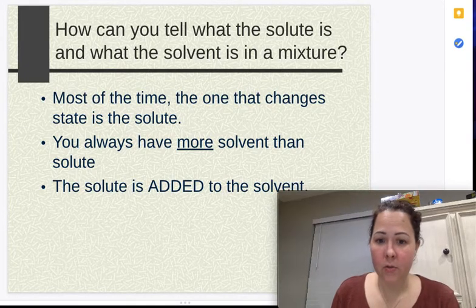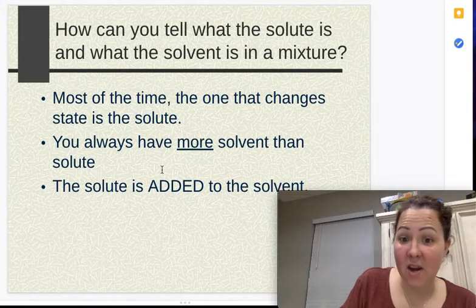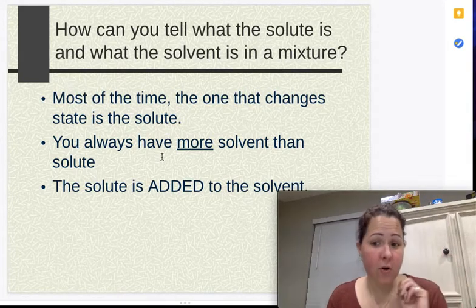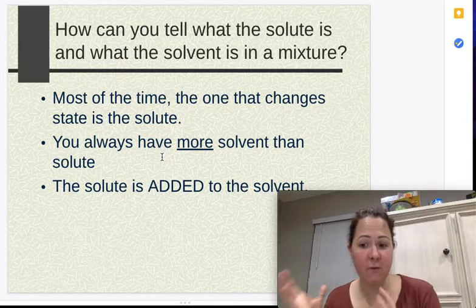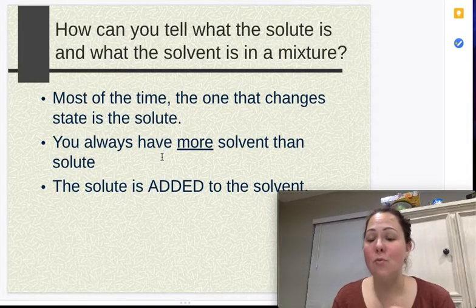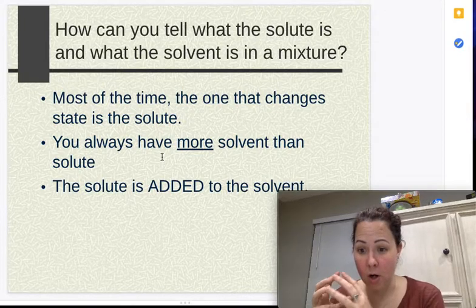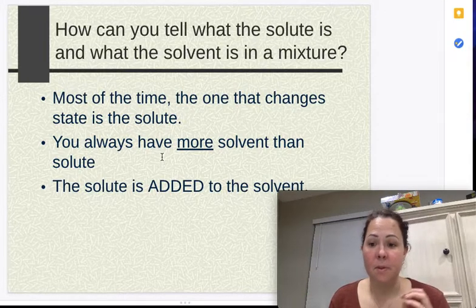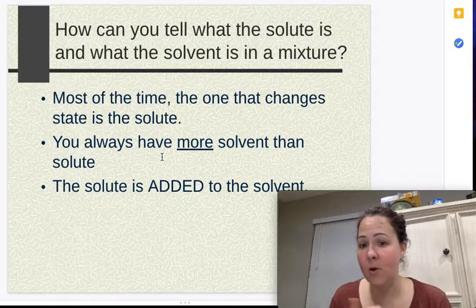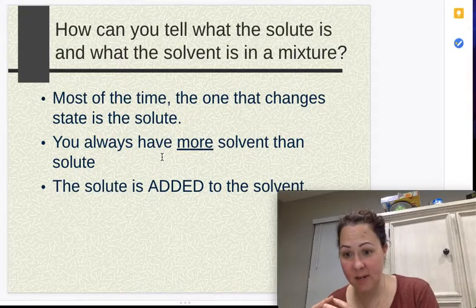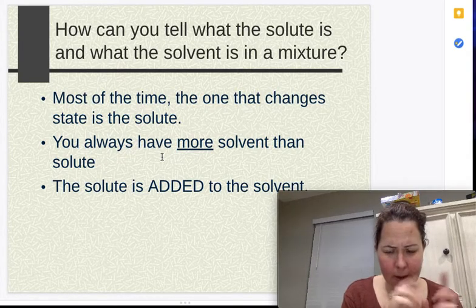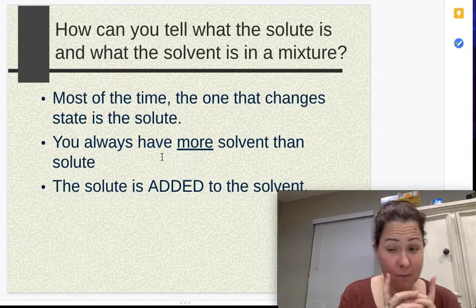Normally what we're going to do with the math is we're going to look at the numbers. When you look at the numbers, it might say you have five grams of sugar, you have 25 grams of water. So you know that your water is your solvent because there's more of it. That might be the percentage, it might be the mass, but no matter what, you're going to have more solvent, a lesser amount of your solute.